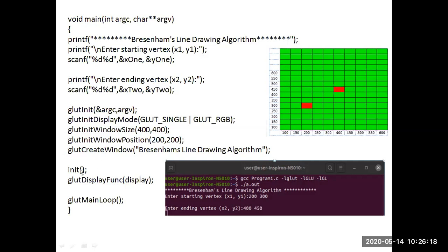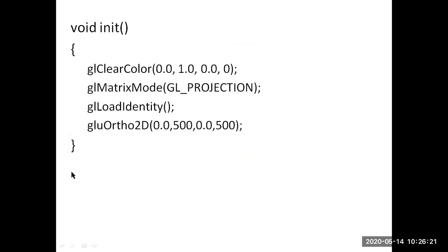In the main function, we call the init function. In the init function, glClearColor sets the background color of the window — here the background color is set to green. glMatrixMode sets the mode to projection mode. glLoadIdentity loads the identity matrix by default. gluOrtho2D specifies the clipping plane with xmin, ymin and xmax, ymax coordinates — it specifies the 2D viewing clip plane.